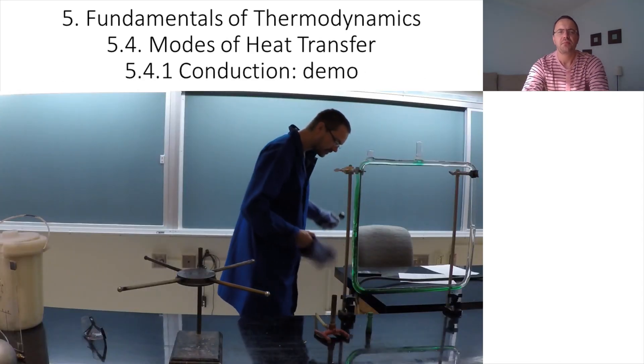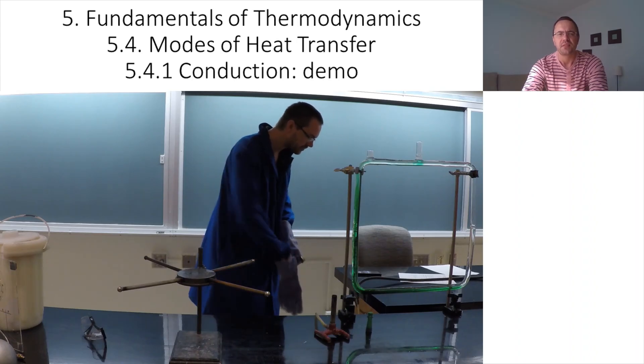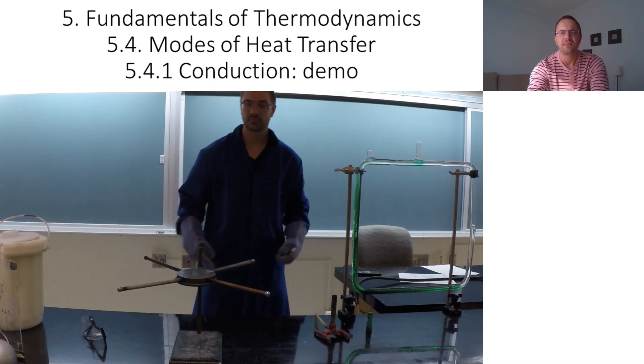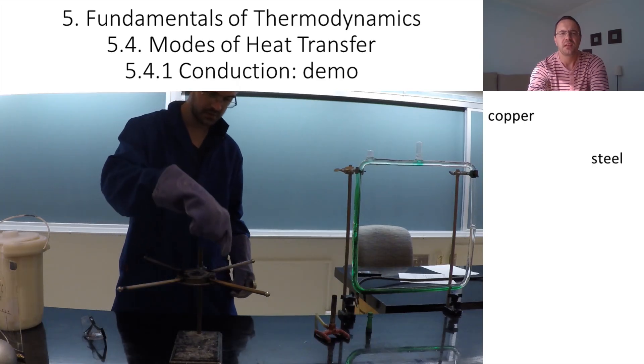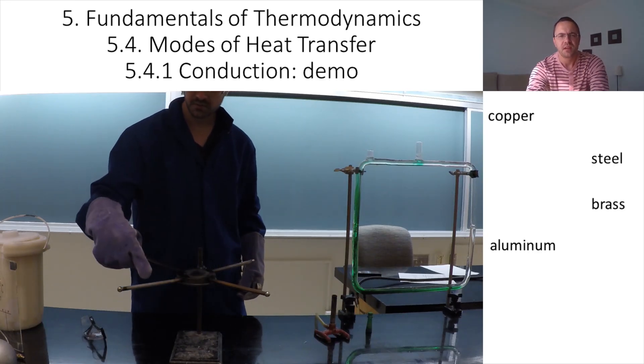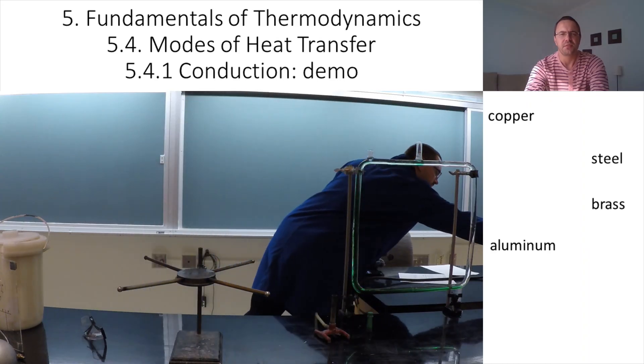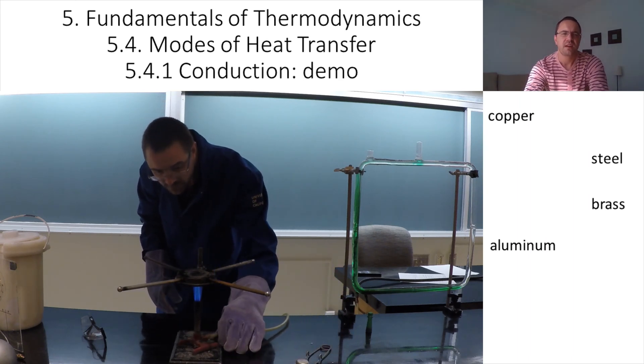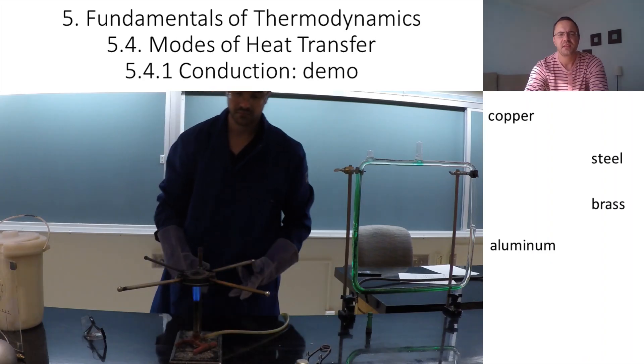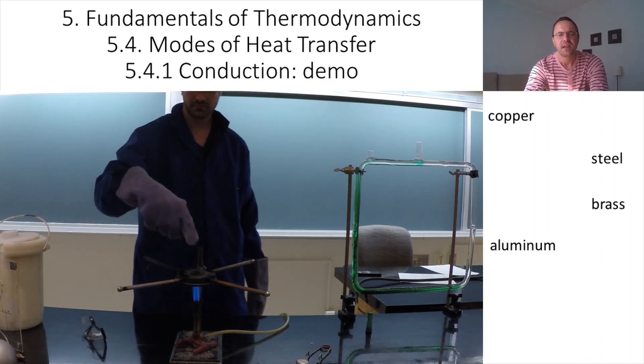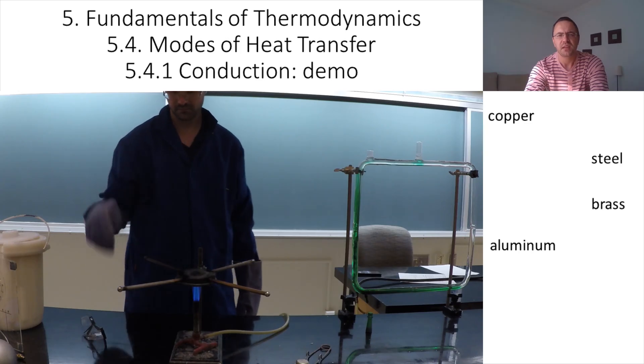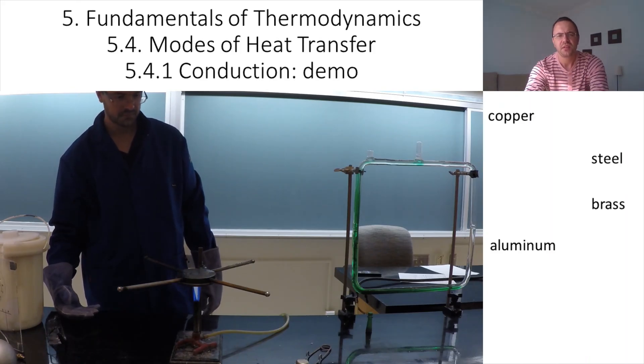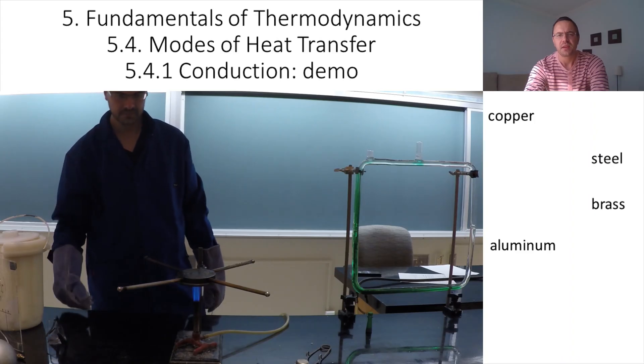In this demo we will illustrate that thermal conductivity depends on the material. I have a central disk and four rods attached to the disk: copper, steel, brass, and aluminum. I will turn on the gas and start the burner to warm up the central disk. As the central disk gets hot, the heat will be conducted along the four rods. At the end of the rods there is a ball bearing attached with a small amount of wax. As the heat is conducted along the rod, eventually the wax will melt and the ball bearing will drop.